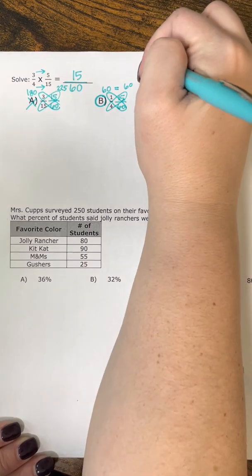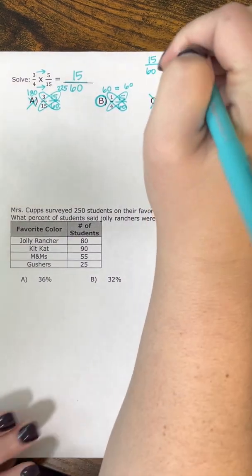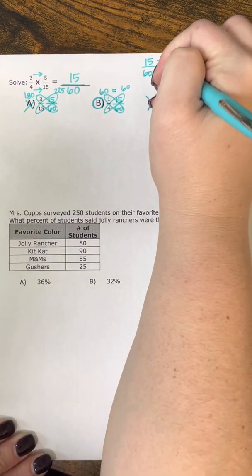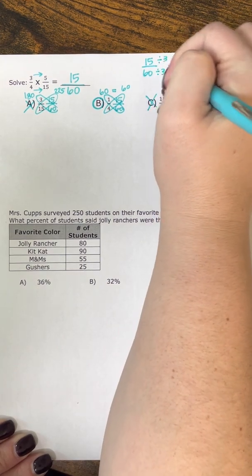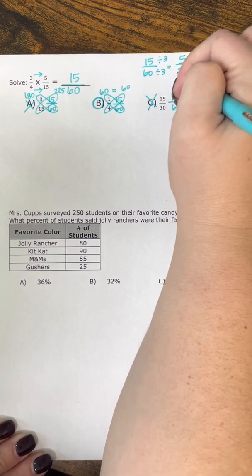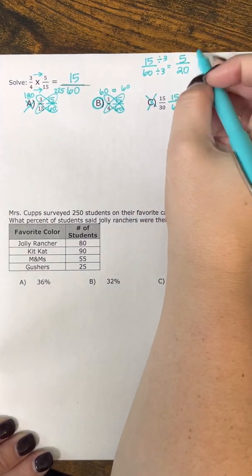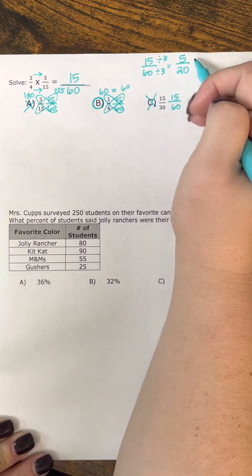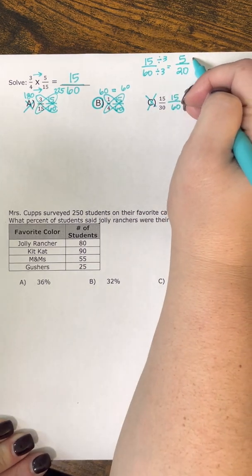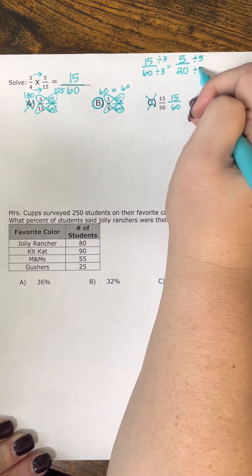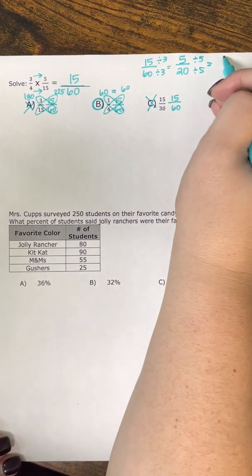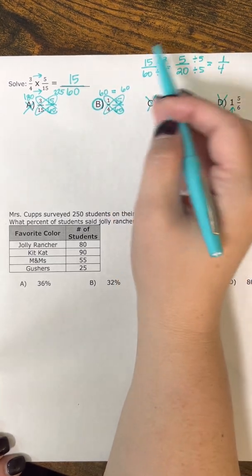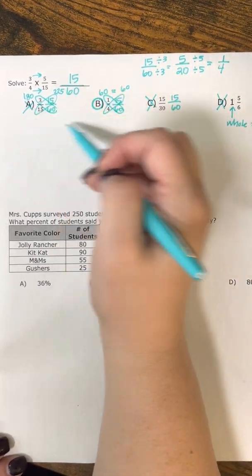You could also use the 2-3-5 method. With 15 over 60, we start by taking out a 2 — we can't take a 2 out of 15, so we move on to 3. 15 divided by 3 is 5, and 60 divided by 3 is 20. Going through the 2-3-5 method again: can't take a 2 out of 5, can't take a 3 out of 5, but we can take a 5 out of both. 5 divided by 5 is 1 and 20 divided by 5 is 4. Either method gives us 1/4.